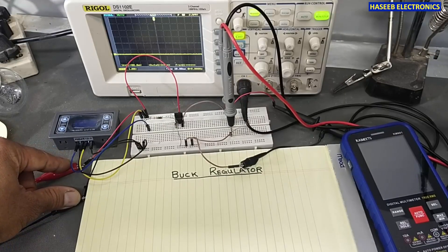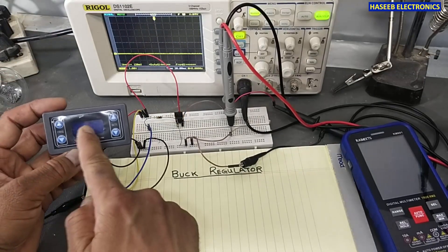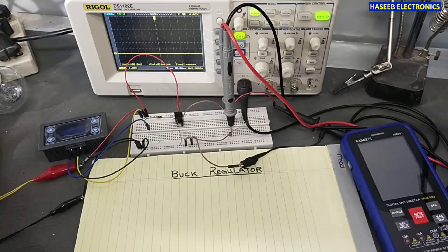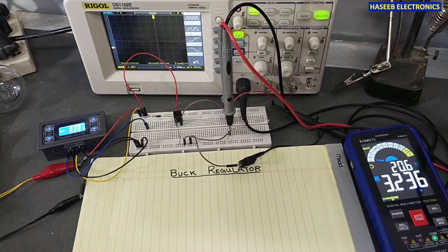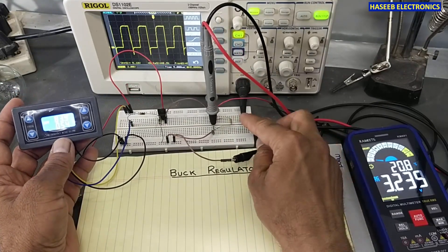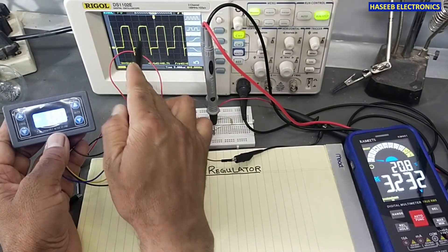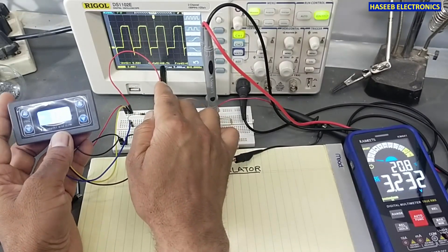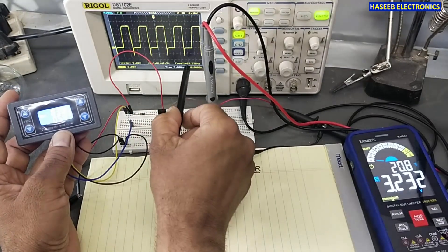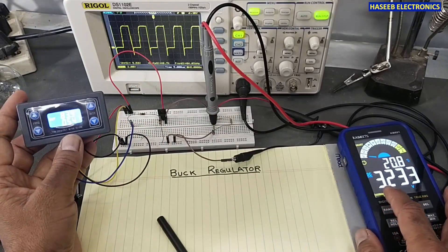I am applying 12 volts here to a MOSFET, connecting a gate drive network, and using a PWM generator to generate pulses to make samples as per our requirement. We can see across the load resistance — here is the load resistance — we are receiving these pulses. It is approximately 48% duty cycle at 83.9 kilohertz. The load is receiving this type of voltage, and the total voltage being sampled is 3.2 volts.